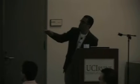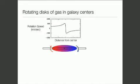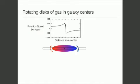Now, in practice, there's always some sort of instrumental blurring that blurs this velocity signature into something that looks more like that in practice. And that's the typical signature of an orbiting disk around the black hole, if you could measure the velocity of the disk.